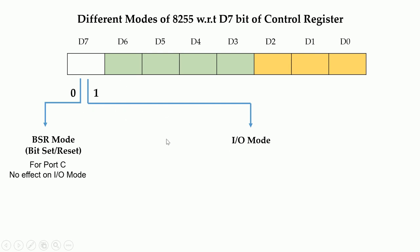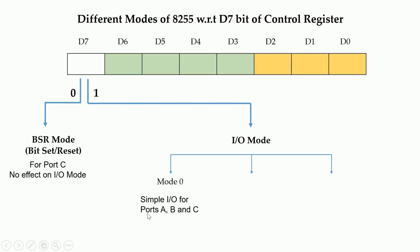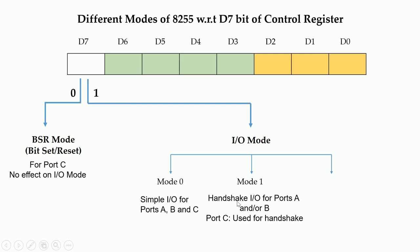In Mode 0, all ports — Port A, Port B, and Port C — work as simple input or output ports. In Mode 1, Port A functions as a handshaking input/output port. Port B can optionally function as a handshaking I/O port or as a simple I/O port. Port C is used for generating the handshaking signals.